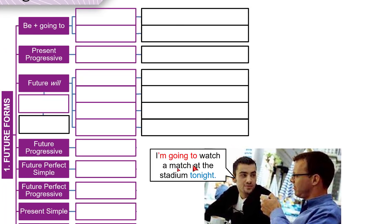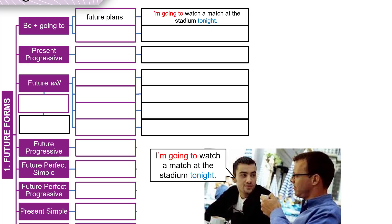"I'm going to watch a match at the stadium tonight." He's going to watch the match later tonight — in the future. We use the verb 'be' (am, is, or are) plus 'going to' and then the verb 'watch'. We use this for plans and arrangements for the future. He must have decided a while ago — maybe last night, maybe a week ago — so it's a plan for the future.